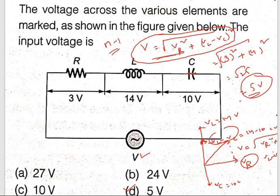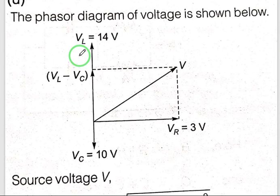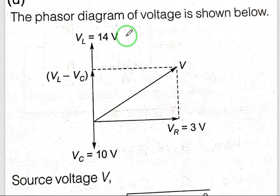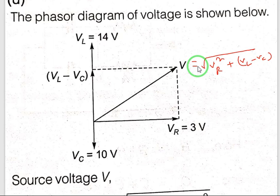Hope you understood. If capacitor is not given, take it as 0; if inductor is not given, take it as 0. That was the first question solved mathematically and conceptually. For the second solution using the phasor diagram: VR equals 3 volts, VL equals 14 volts, VC equals 10 volts. Projecting VC upward gives VL minus VC equals 4 volts as the resultant. Combining with VR: V equals root over VR squared plus VL minus VC whole squared, that is root over 9 plus 16 equals root 25 equals 5 volts.